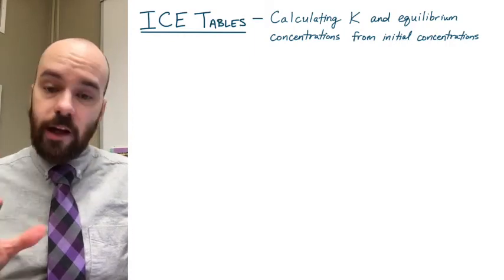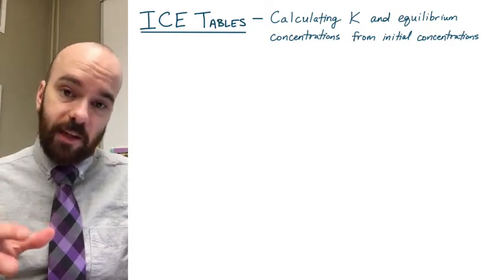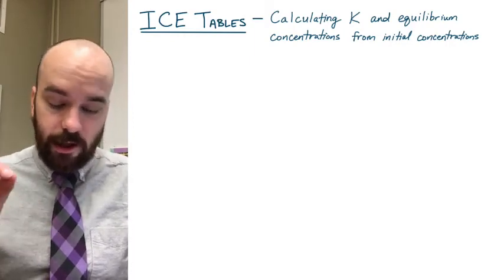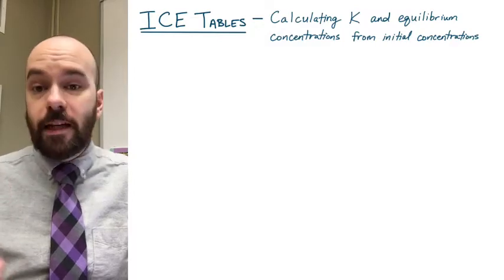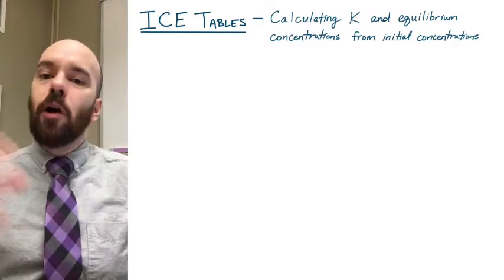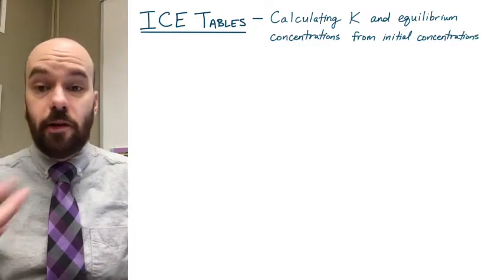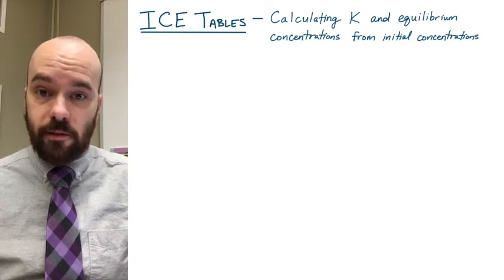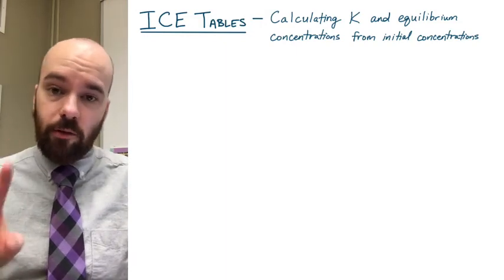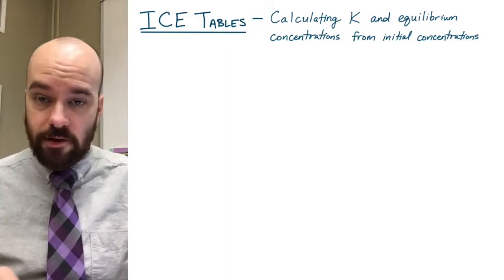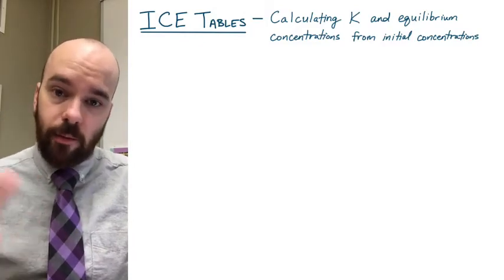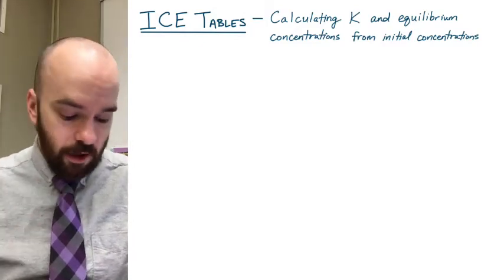Hey everyone. In this video we're looking at how to use ICE tables or RICE tables to calculate K, the equilibrium constant, and the equilibrium concentrations if we already know some initial values like the initial concentrations. In the first problem we'll calculate K, and in the second problem we'll calculate equilibrium concentrations. The best way to see how this works is to just jump into a problem and see it for yourself.